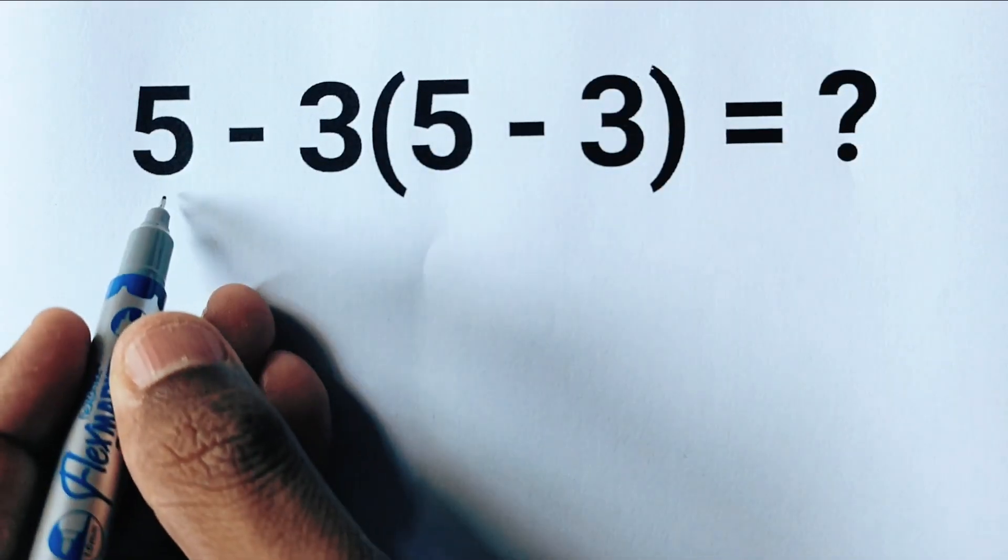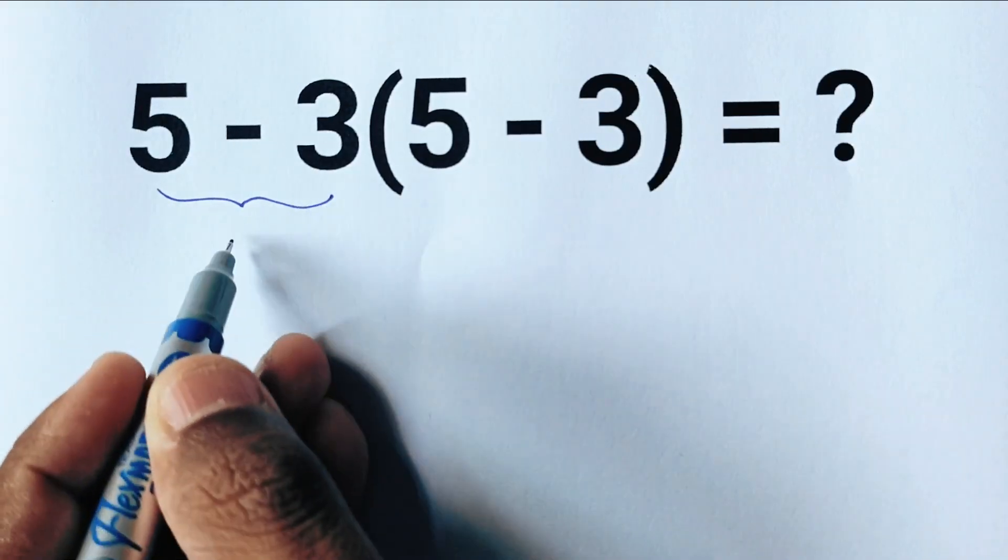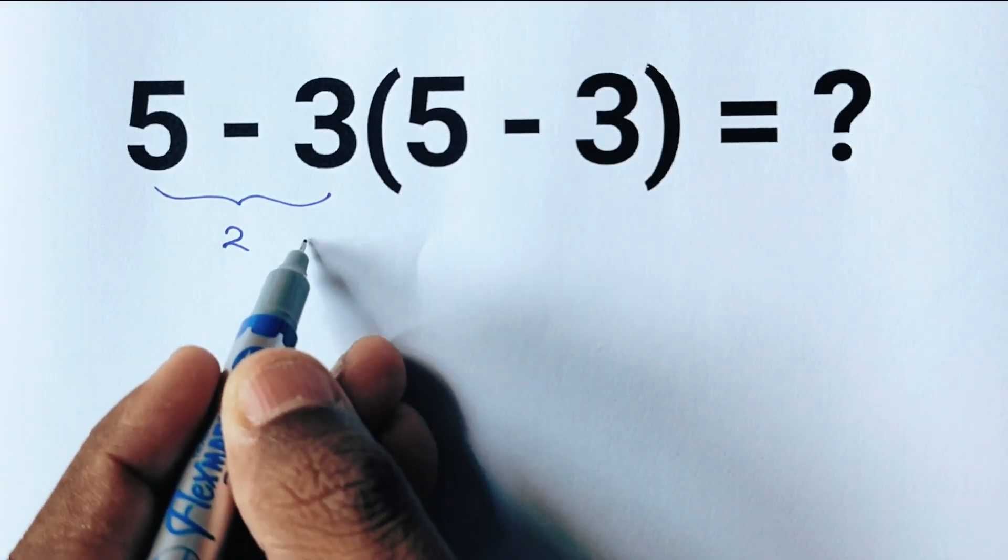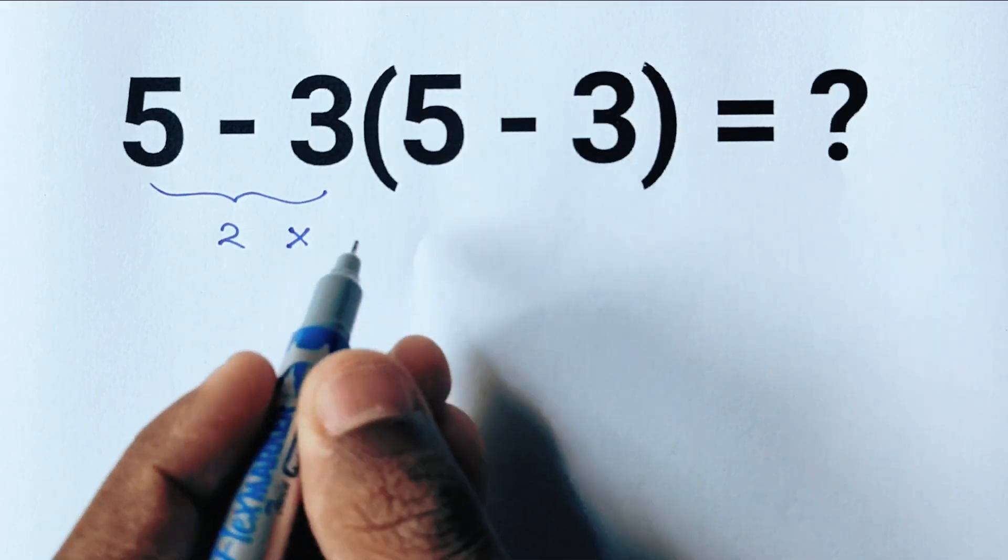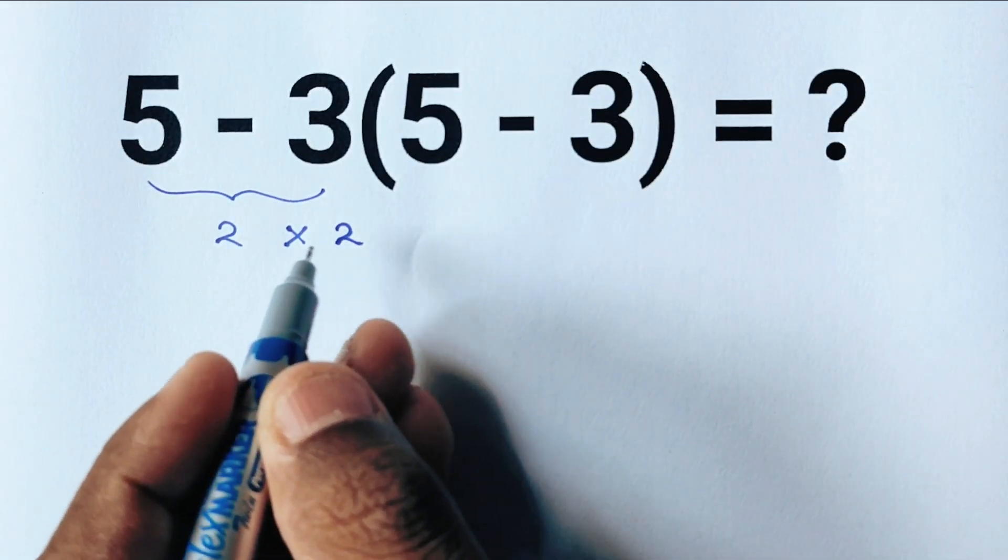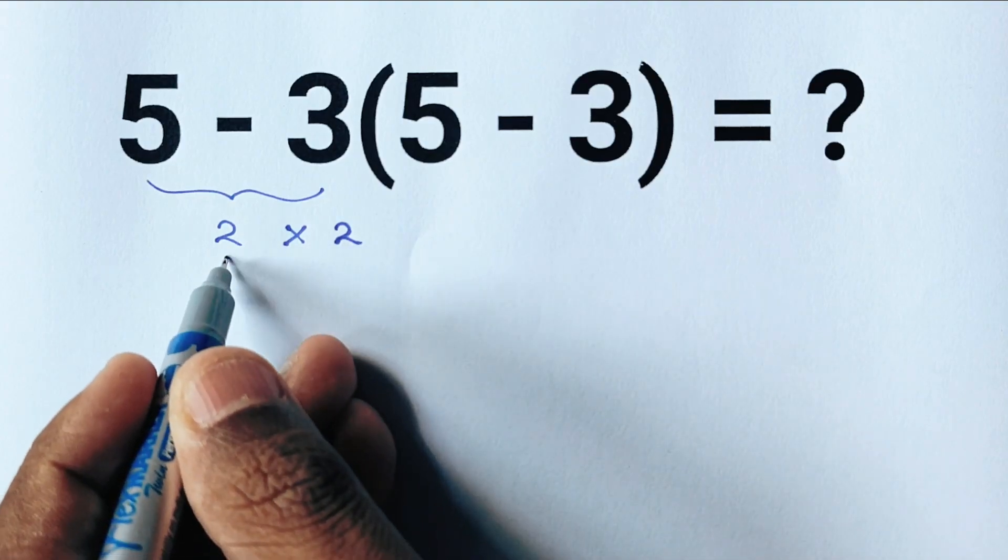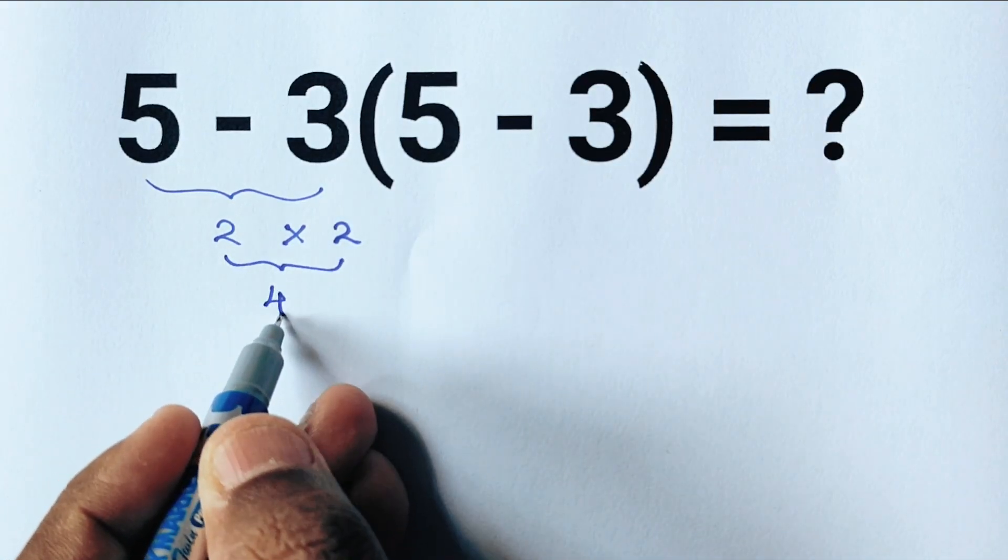So here 5 minus 3 equals 2, and we have parenthesis which means multiplication, and again 5 minus 3 which equals 2. So 2 times 2 equals 4.